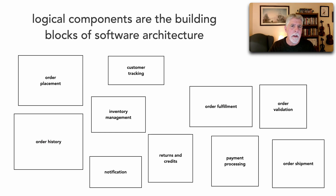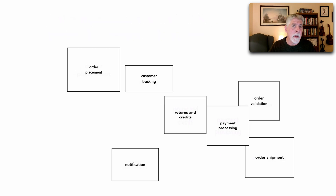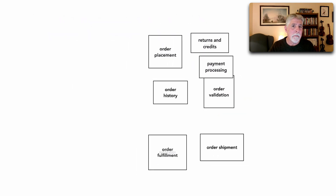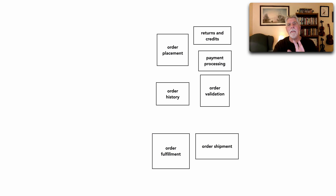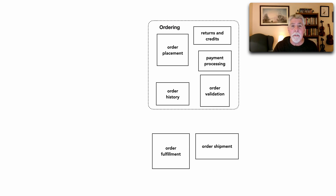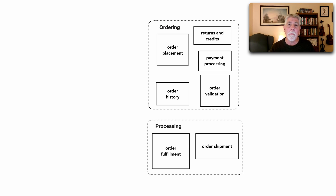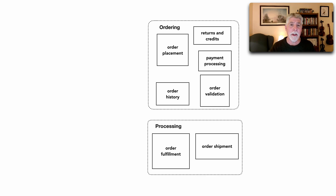If we rearrange some of these building blocks, we can start grouping them into domains. This is our ordering domain and this is our processing domain — so we can place an order and then process that particular order.